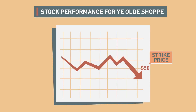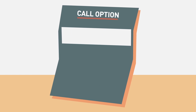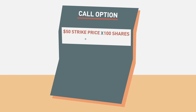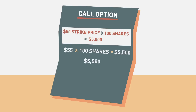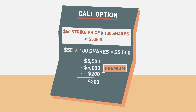If you decide to exercise your call option, you will pay $5,000 for the 100 shares. You could then hold on to that stock or turn around and sell it in the market at the current price of $55 per share. This would result in a profit of $300 when you take into account the premium you paid.